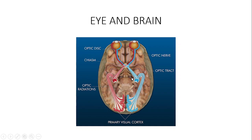There are certain fibers called Wilbrand's knee fibers. The most inferior nasal fibers, as they cross over to the contralateral optic nerve at the level of the chiasma, are called Wilbrand's knee fibers.